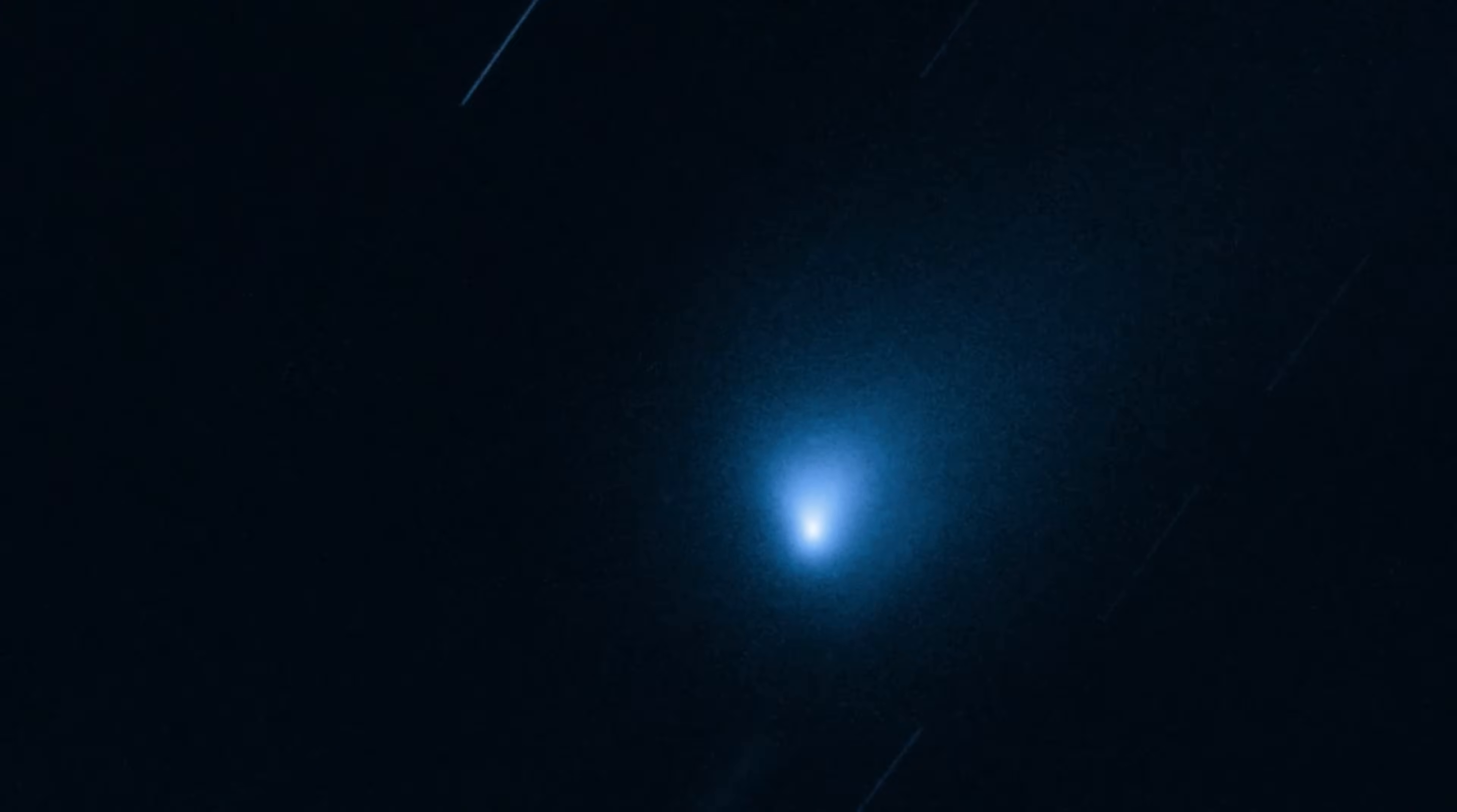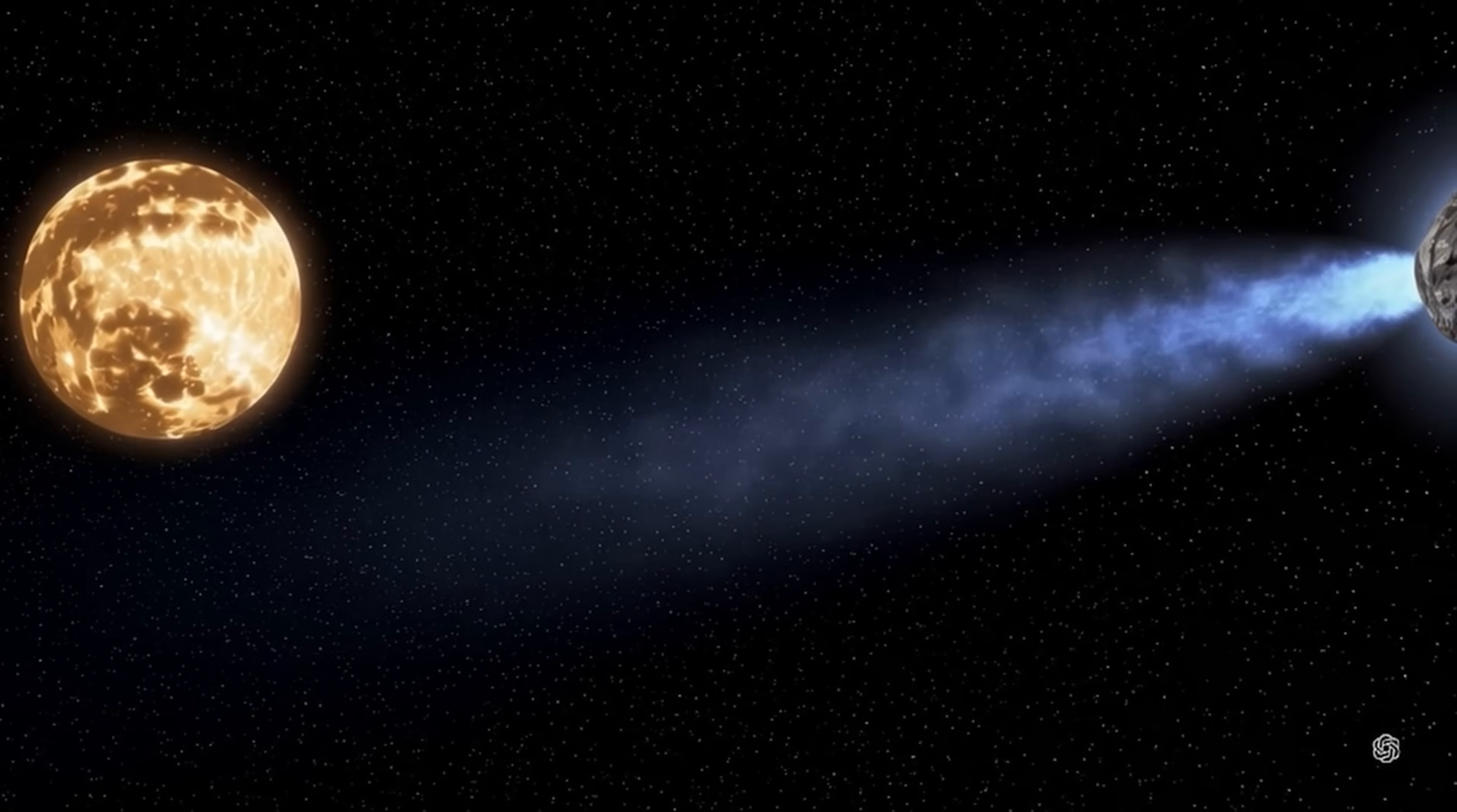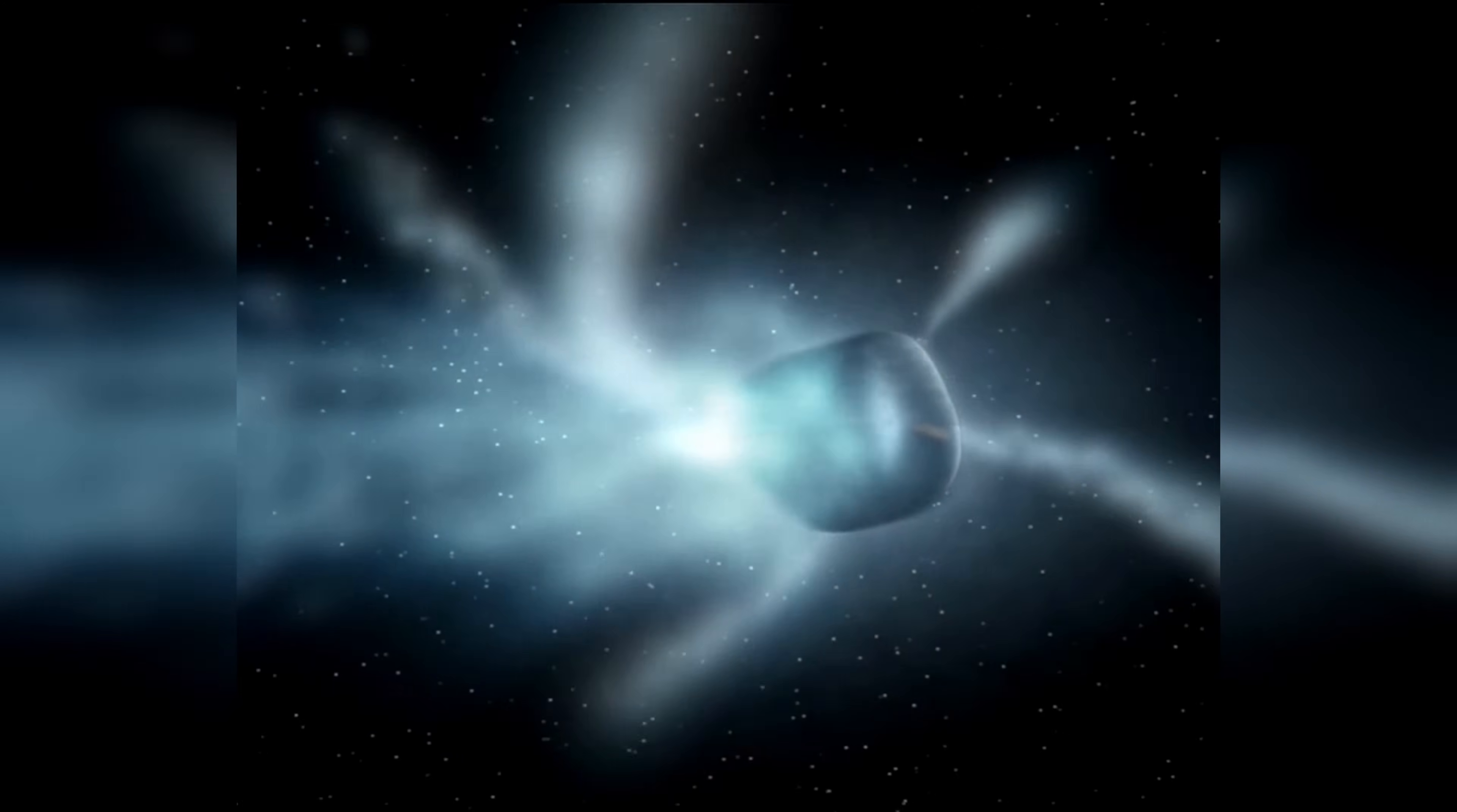Observations revealed a plume extending toward the sun. Astronomers dubbed it a reverse dust tail. To visualize it, imagine a campfire whose smoke drifts not with the wind but against it. Even stranger was its motion. Careful tracking showed 3I/ATLAS accelerating slightly in a way that could not be explained by the jets of gas we see.